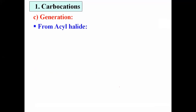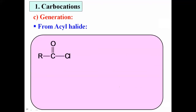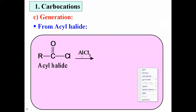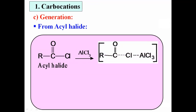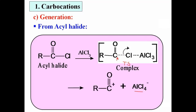The fifth method is from acyl halide. When acyl chloride reacts with AlCl3 (a Lewis acid catalyst), a bond forms between chlorine and aluminum while simultaneously the bond between carbon and chlorine partially breaks — forming a transition state complex. The bond then completely breaks, giving AlCl4⁻, and the carbonyl carbon acquires a positive charge. This is called an acyl carbocation — a different type of carbocation generated using acyl halide.